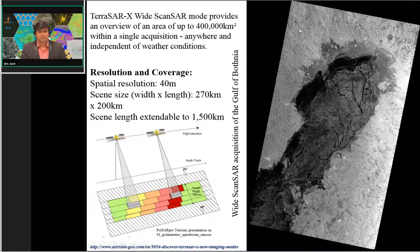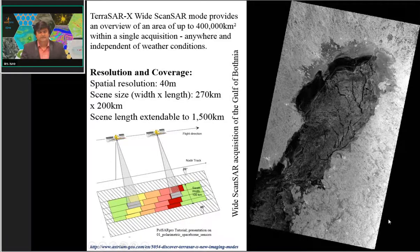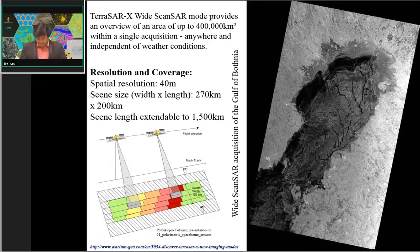An example of wide swath mode from TerraSAR-X shows a swath of approximately 270 by 200 km with spatial resolution of approximately 40 meters. For applications requiring large area coverage — such as flood mapping, monitoring, or land use and land cover mapping — wide swath mode datasets are very useful.